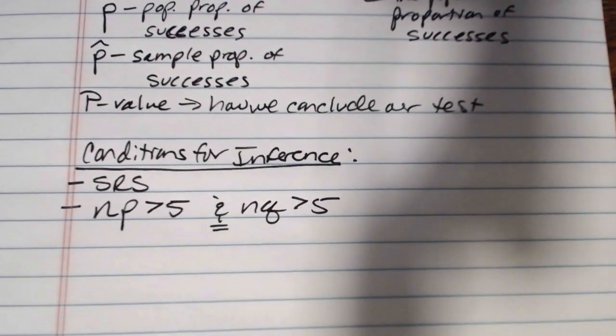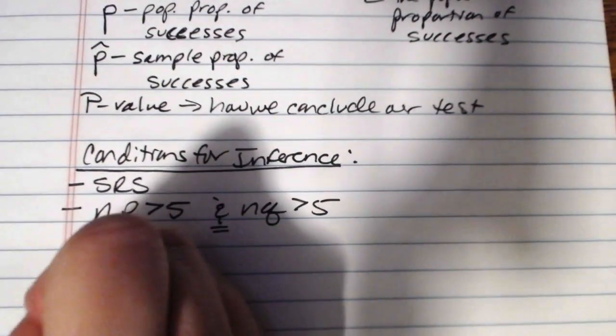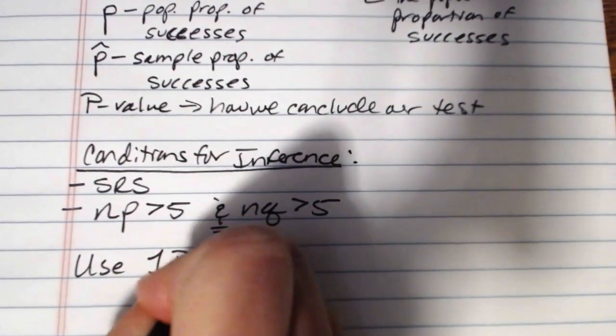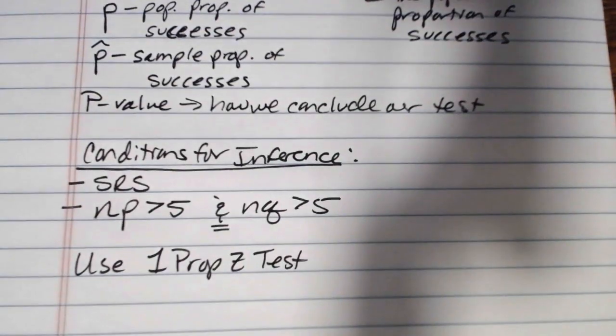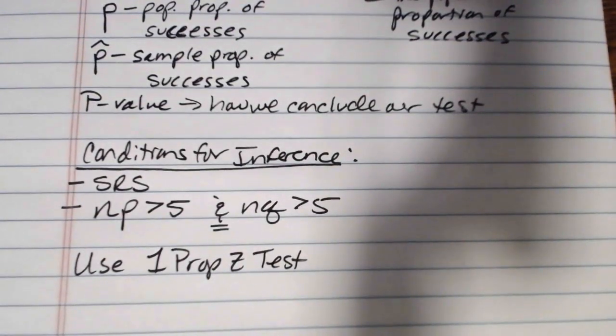From there, it's basically the same set of steps that we've been doing. We start by identifying our null and alternate hypotheses. We check conditions to make sure that the conditions for inference are met. If they are met, then in the calculator we will use one prop z test. Or if we're going to do it by hand, we can do it by hand and I'll show you both methods.